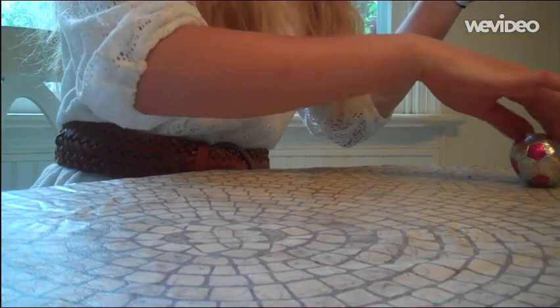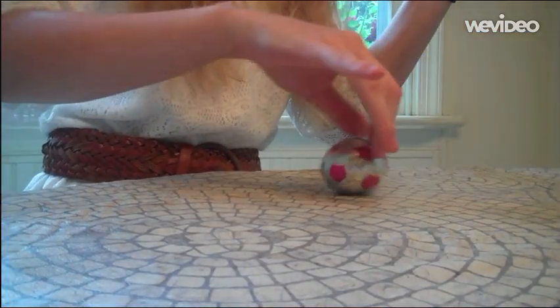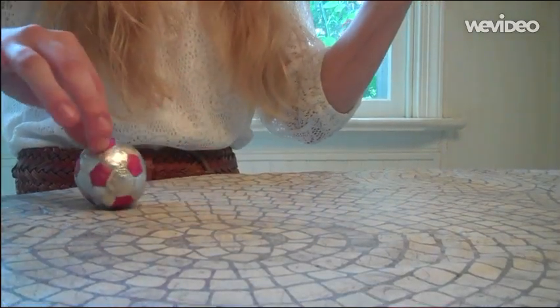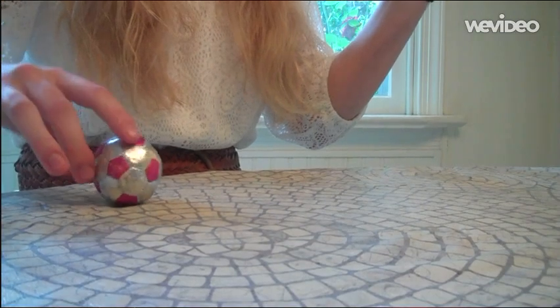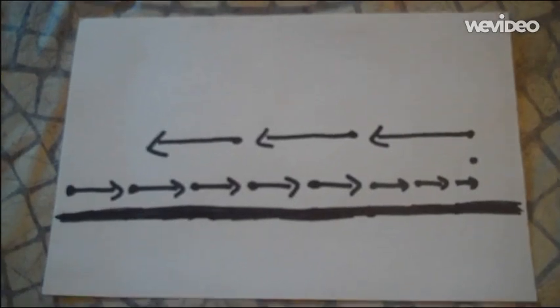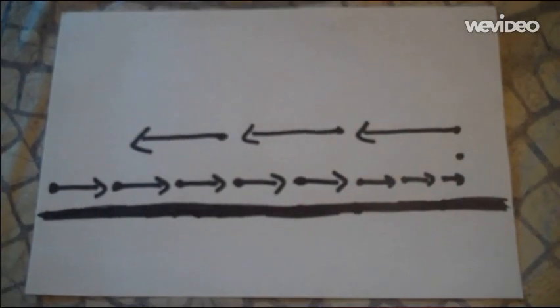Here's an example. A ball rolls forward at a constant velocity for five seconds. It slows down for three seconds until it comes to a stop. Then the ball rolls back towards the starting point at a faster velocity. This is the motion map for this problem.